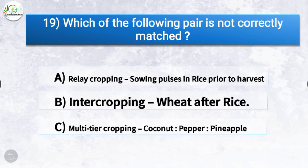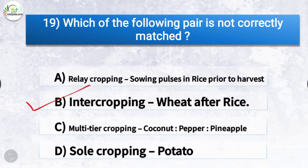Question number 19: Which of the following pair is not correctly matched? The correct answer is option B, intercropping and wheat after rice. This pair is not correctly matched.